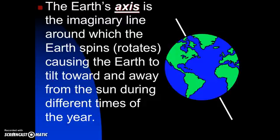The Earth's axis is that imaginary line that you see here, and the Earth spins on that line causing the Earth to tilt toward and away from the Sun during different times of the year.